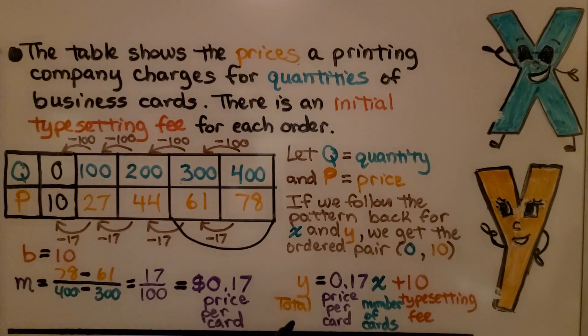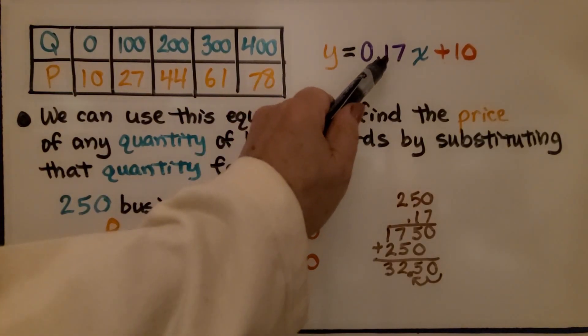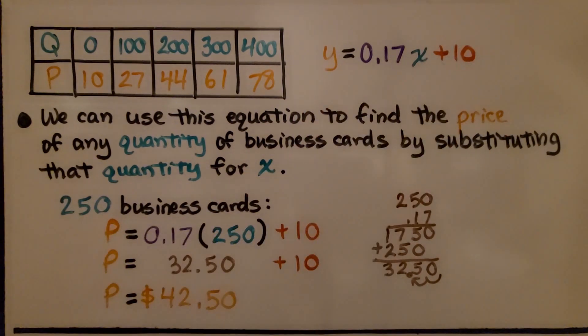Our equation is y, that's the total, equals 0.17x plus 10. That's our typesetting fee and that's the number of cards we're going to order. Our equation was y equals 0.17x plus 10. We can use this equation to find the price of any quantity of business cards by substituting that quantity for x.